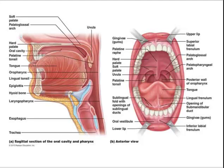The orbicularis oris forms the core of the lip, while the buccinator forms the core of the cheek. The labial frenula are the small folds of tissue that join each lip to the gum. The posterior portion of the roof of the oral cavity is the hard palate. The palatine process of the maxillary bones and the horizontal plates of the palatine bones form its core.